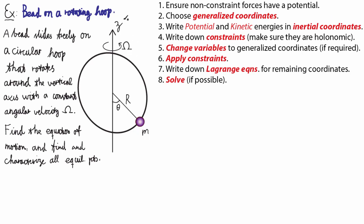The next problem we will take on is the one depicted in this sketch. We have a circular hoop with radius capital R that is rotating around the z-axis which goes through the center of the hoop. The hoop is oriented in the vertical direction and rotating around the z-axis. We have a bead which can slide freely without friction around the hoop, and we want to find the equation of motion for this bead and also find and characterize all the equilibrium points it might have.